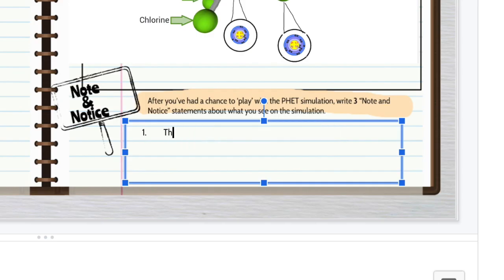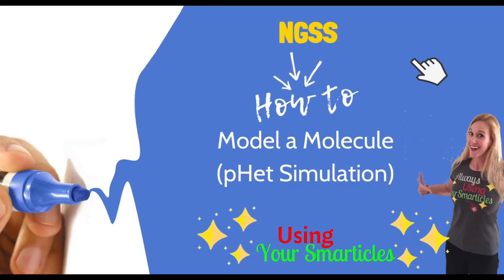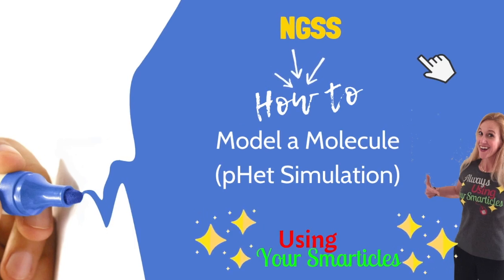Finally, there's one last task: in the Note and Notice section, write your observations about the molecule in the simulator. What kinds of things did you see when you looked at it or played with it? In my case, I noted that there were five green spheres representing chlorine atoms and one orange sphere that is a phosphorus atom. I'm also going to record an observation I made that I don't necessarily have the science knowledge for yet. Hopefully you've modeled a unique molecule from the simulator using this tutorial. Good luck!